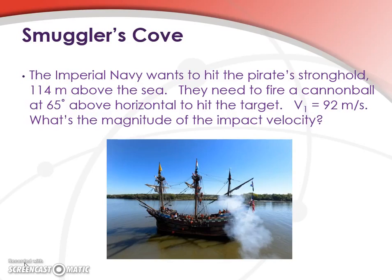So here's the one we're going to do today. The Imperial Navy are in Smuggler's Cove and want to hit the pirate stronghold 114 meters above the sea. They need to fire their cannonball at 65 degrees above the horizontal to hit the target. The velocity of their cannonball coming out of the cannon is 92 meters per second. What we want to know is what's the magnitude of the impact velocity. Will it be enough to knock over the wall of the stronghold?